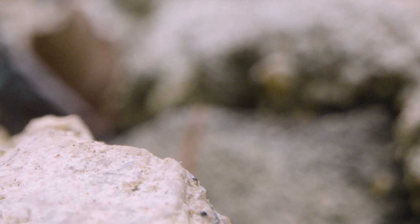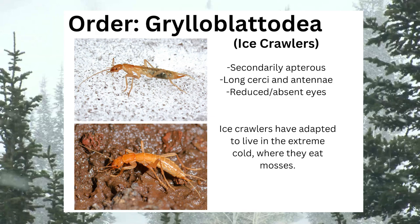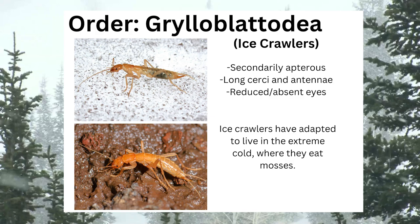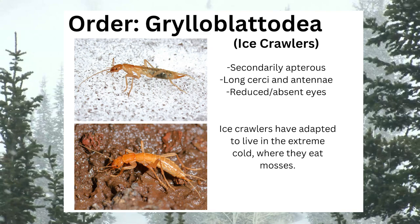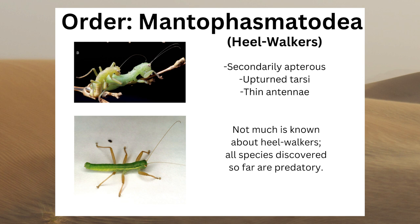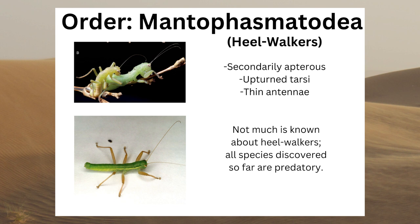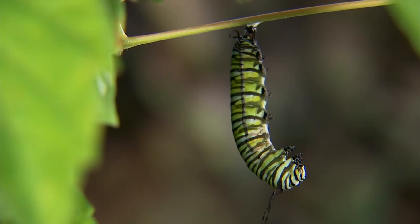Lesser known but still important to be aware of are the two orders Grylloblattodea and Mantophasmatodea. The order of extremophiles known as Grylloblattodea, also called ice crawlers, can be identified by being secondarily apterous, having long cerci and antennae, and reduced or absent eyes. Ice crawlers have adapted to live in the extreme cold, where they eat mosses. Mantophasmatodea, the order of heel walkers, can be identified through their winglessness, their upturned tarsi, and their thin antennae. Not much is known about heel walkers; all species discovered since these insects were described in 2002 are predatory.